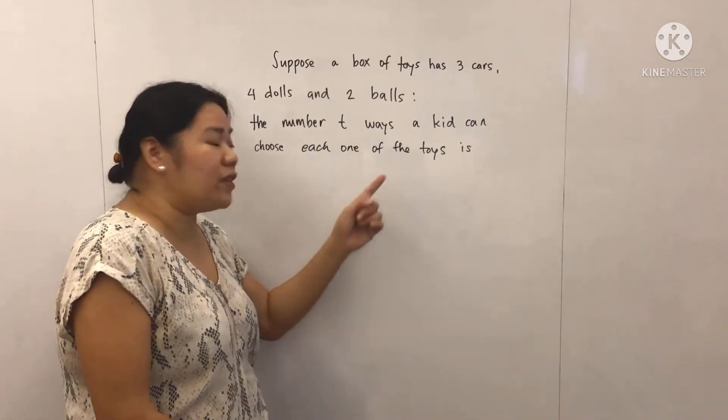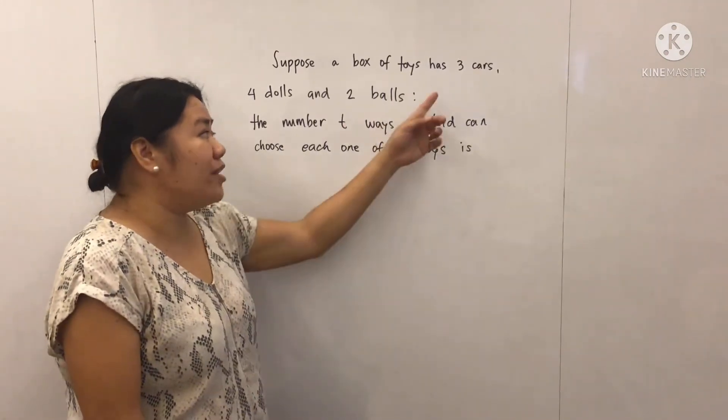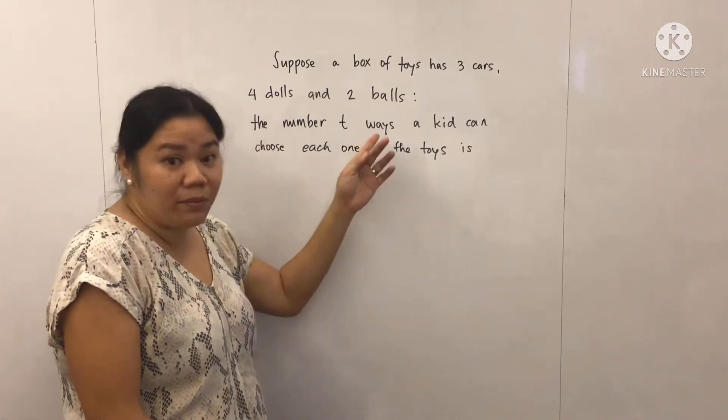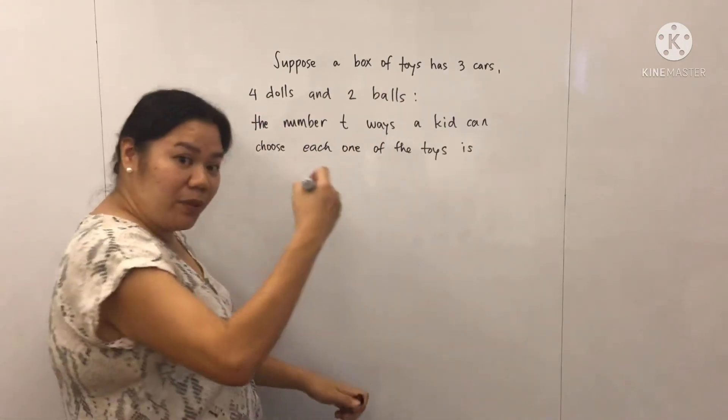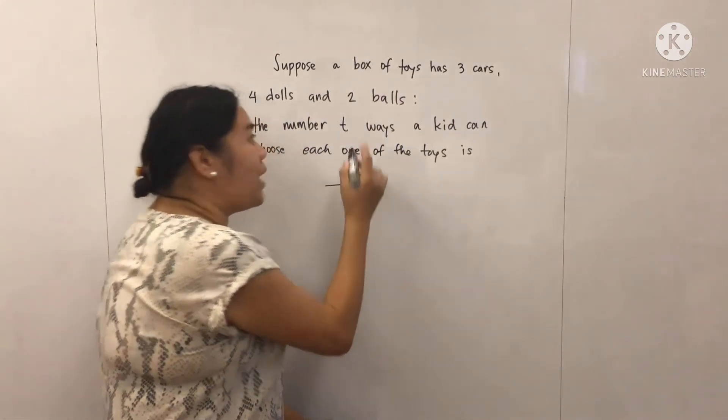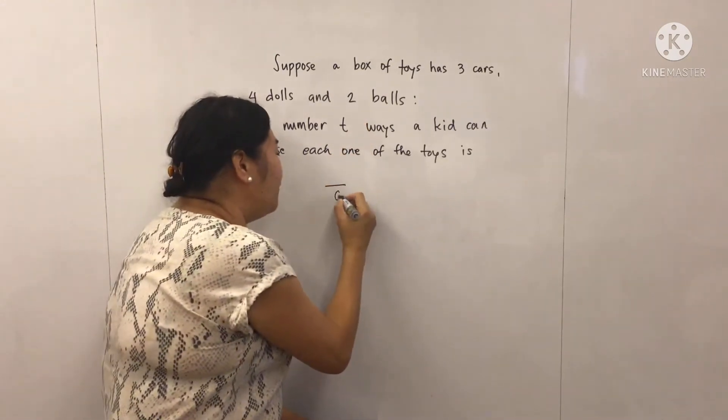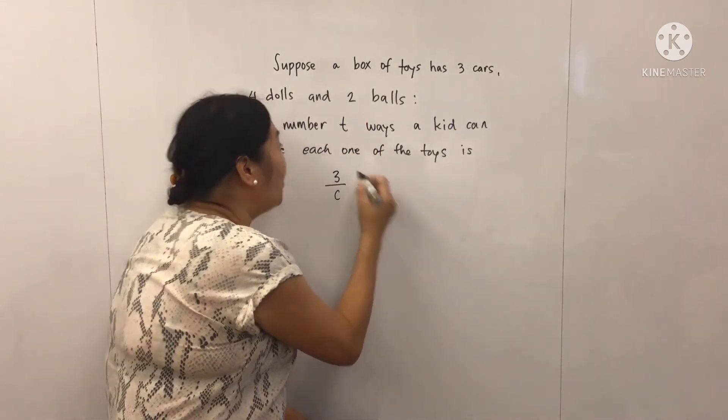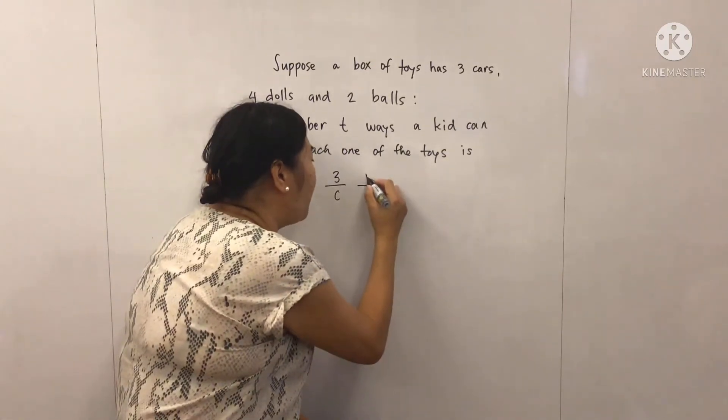choose each one of the toys is, meaning to say, one car, one doll, one ball. Okay, so how do we approach this? Let's look first. How many cars do we have? We have three. And then how many dolls do we have? We have four.